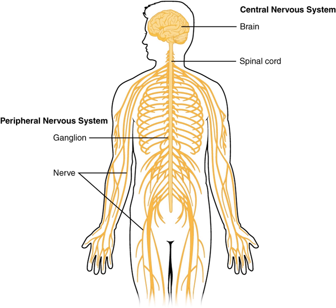In addition, rats lack convolutions in their neocortex, possibly because rats are small mammals, whereas cats have a moderate degree of convolutions, and humans have quite extensive convolutions. Extreme convolution of the neocortex is found in dolphins, possibly related to their complex echolocation.